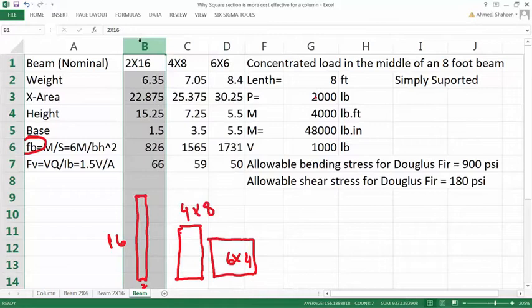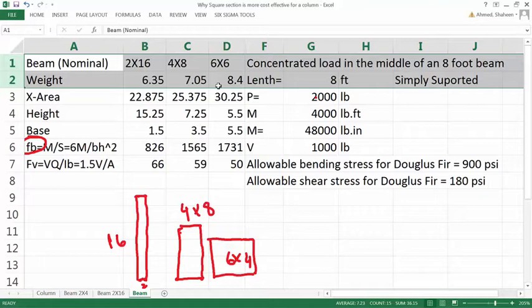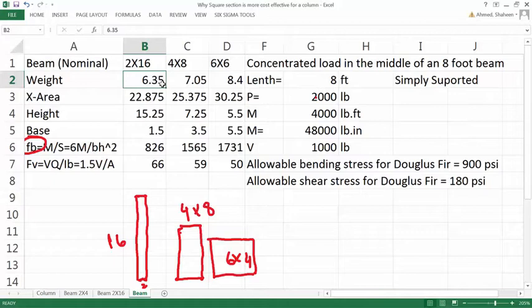Now look at this - the weight of this I have intentionally chosen this way. You can see that 2x16 weighs 6.35 pounds per foot, and then this one has 7 pounds per foot, this one has 8 - 6x6 has 8.4 pounds per foot. So 6x6 in this case will be most expensive to buy because it has more weight. 4x8 will be a little bit cheaper and 2x16 will be the cheapest one.